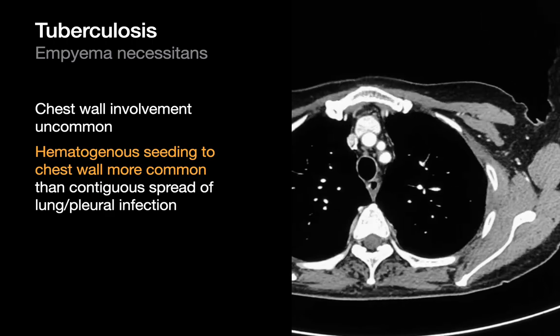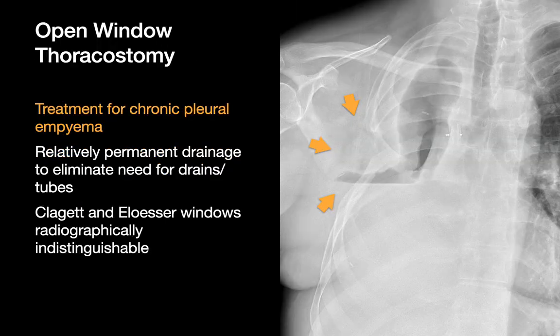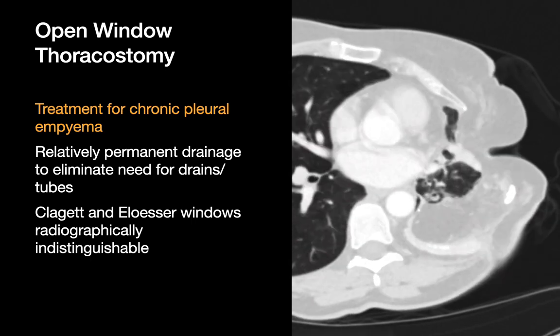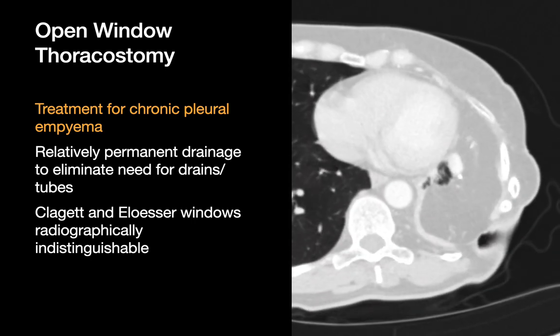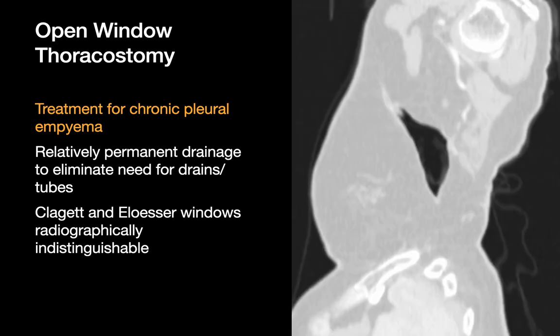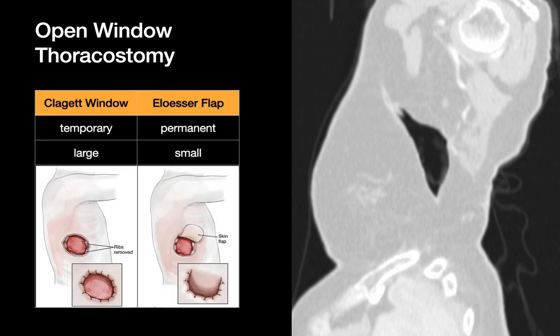A quick aside about open window thoracostomies — these are windows in the chest wall created surgically to provide long-term drainage of a chronic empyema. The two most common types are the Clagett window and the Eloesser flap. They're tough to distinguish from each other on imaging; however, Clagett windows tend to be temporary and surgeons hope to eventually close them, while Eloesser flaps tend to be permanent and are generally smaller. You'll also encounter chest wall hematomas when reading chest imaging.